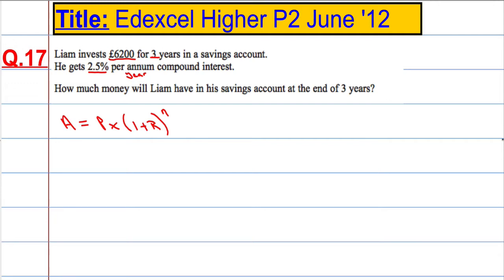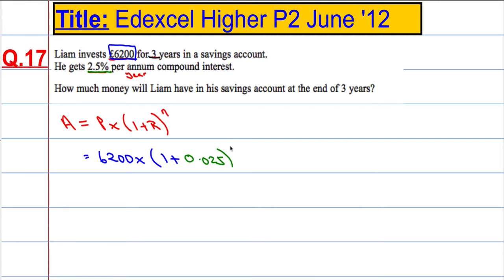So the principal is 6,200, and we're going to multiply that by 1 plus the rate. The rate is 2.5%, and we'll give that as a decimal: 0.025, to the power of N, which is the number of years — which is 3.